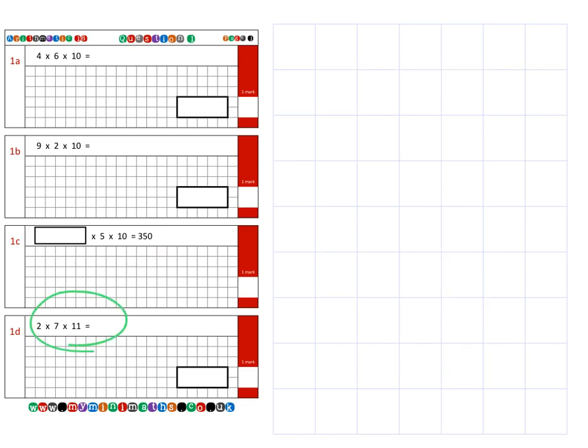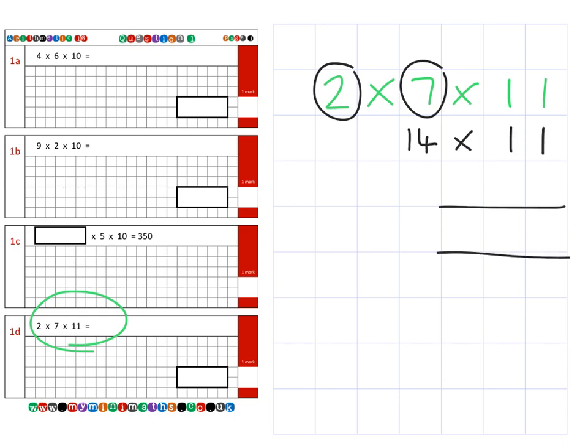And finally, on to question 4, which is 2 times 7 times 11. And again, 2 times 7 is 14, and then we're going to times that by 11 to give us a final answer of 154.